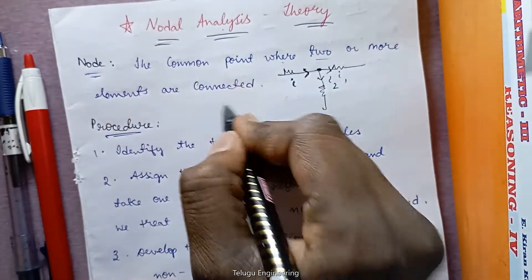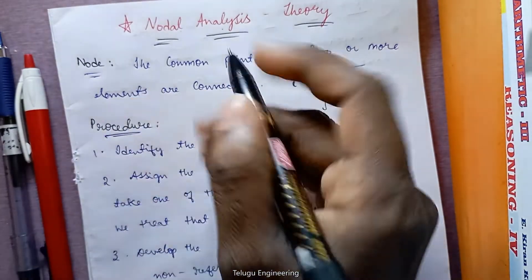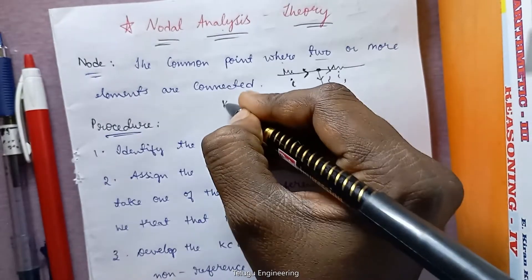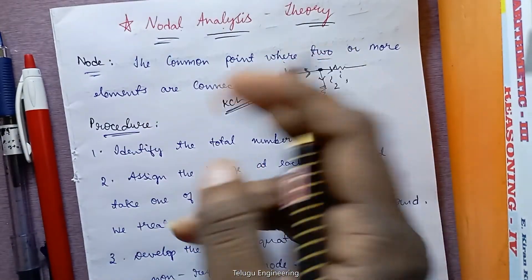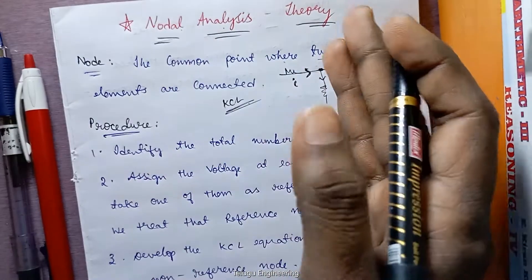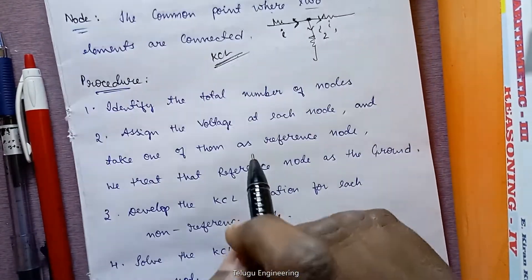And the main important thing: since we are discussing about current, nodal analysis will be using KCL. So KCL. In mesh analysis we use KVL, and here in nodal analysis we use KCL. So procedure: